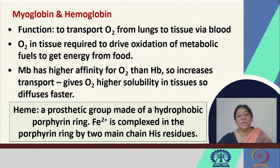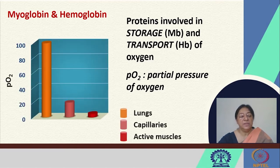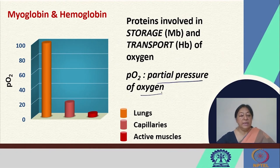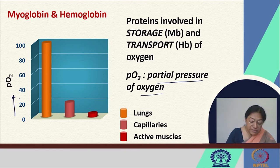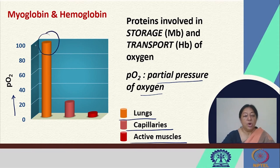The heme is the prosthetic group present here, made up of a hydrophobic porphyrin ring, and Fe2+ is complexed in this porphyrin ring by two main chain histidine residues. Myoglobin is involved in storage and hemoglobin in transport of oxygen. In the graph shown, we look at the specific partial pressure of oxygen and its percentage — given in millimeters of mercury — indicating its location in the lungs, in the capillaries, and in the active muscles, where the lungs have the maximum amount of oxygen.